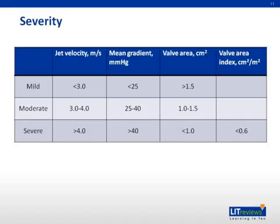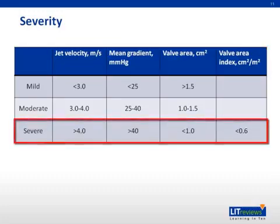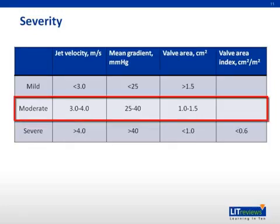Aortic stenosis is best described as a disease continuum, and no isolated value can consistently and accurately define severity. The 2008 ACC guidelines use aortic jet velocity, mean gradient, and valve area to classify severity, with severe AS defined as a jet velocity greater than 4 m/s, mean gradient greater than 40 mmHg, and a valve area less than 1 cm². Once moderate AS is present, the average increase in jet velocity is 0.3 m/s per year, the average increase in mean pressure gradient is 7 mmHg per year, and the average decrease in valve area is 0.1 cm² per year.